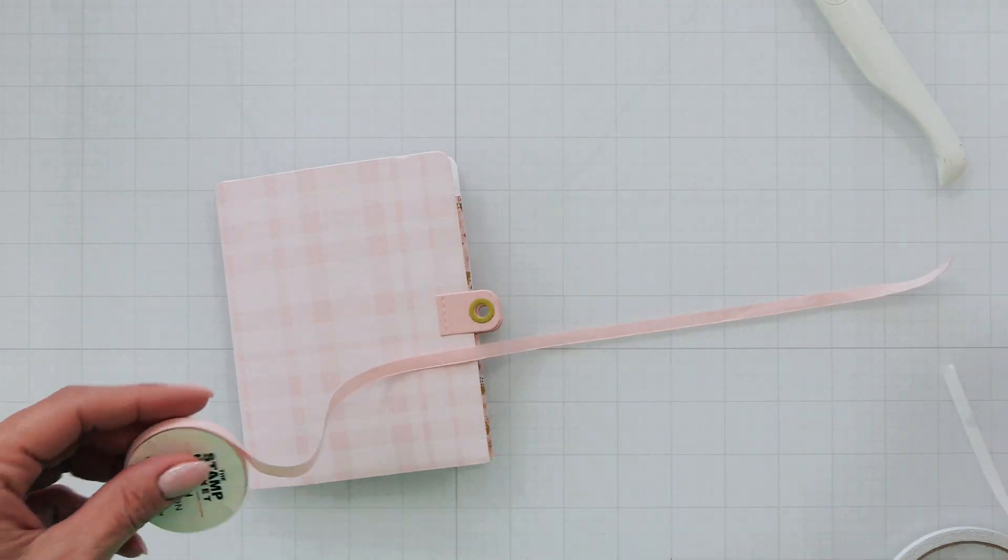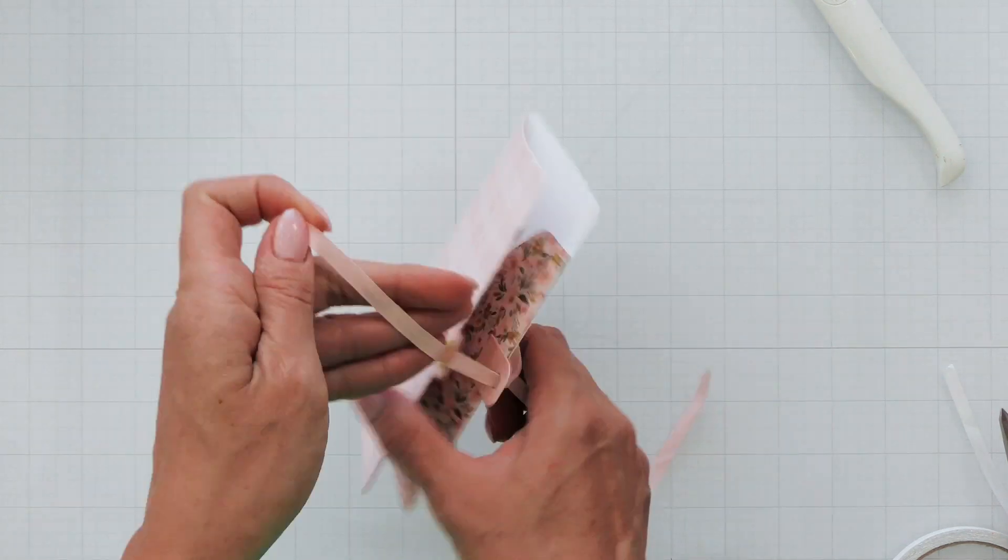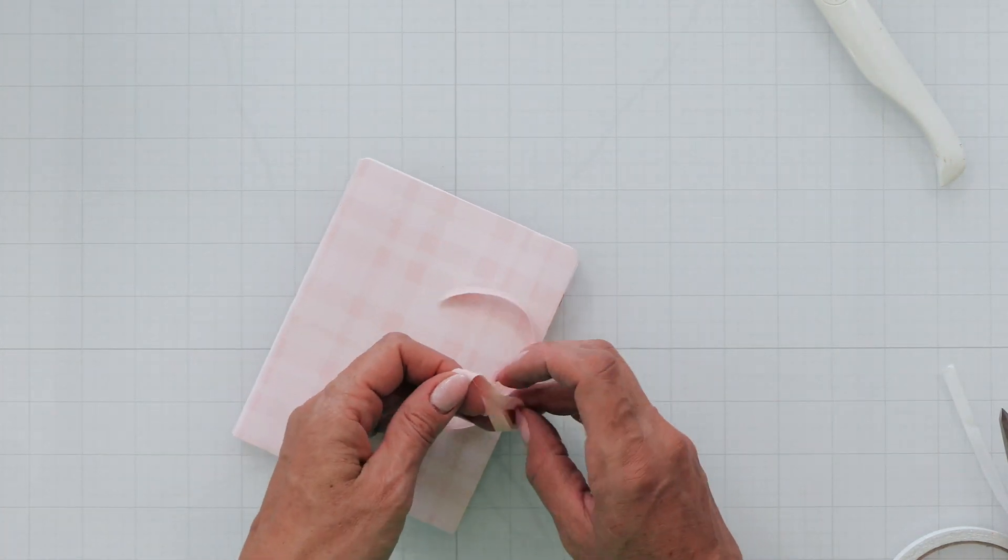Now of course this is the perfect time to pull out that stamp market ribbon and use that to secure this closed. It's the perfect finishing touch for your traveler's journal.